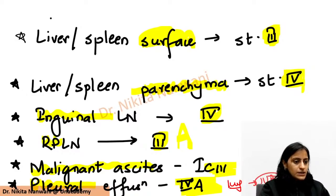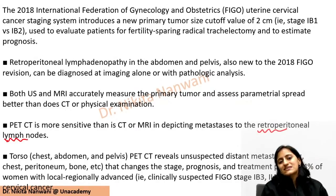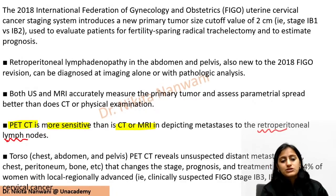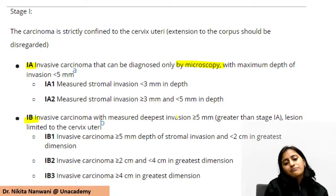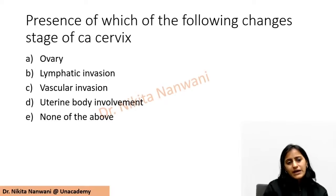Important point: for retroperitoneal lymph node assessment, the most sensitive investigation is PET-CT - it is more sensitive than CT or MRI. Now for MCQs: 'Presence of which of the following changes the stage of ca cervix?' - think about lymphovascular invasion, ovary involvement, uterine body involvement.